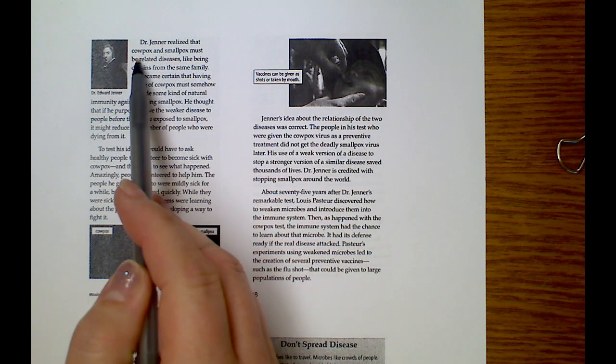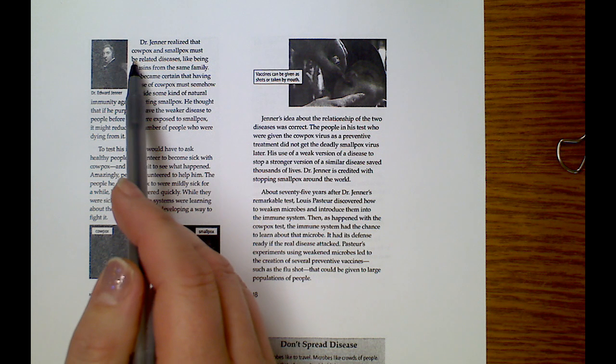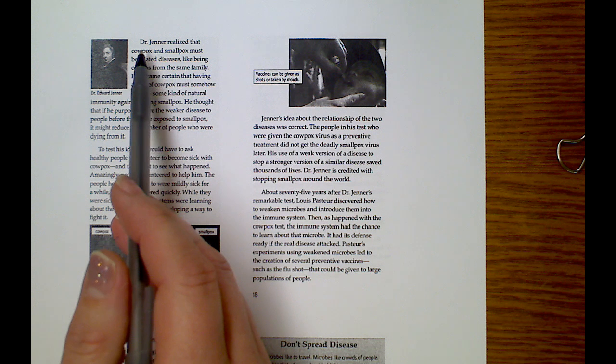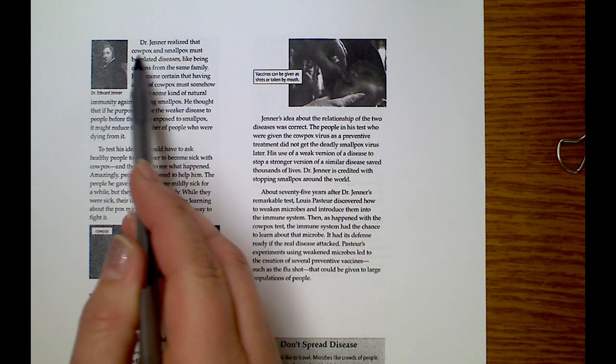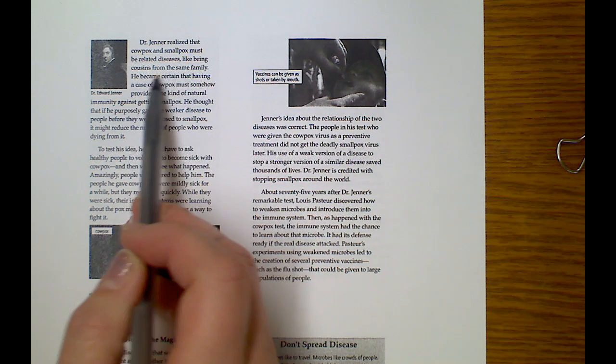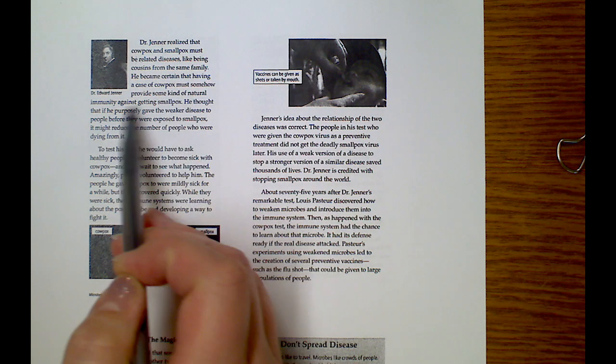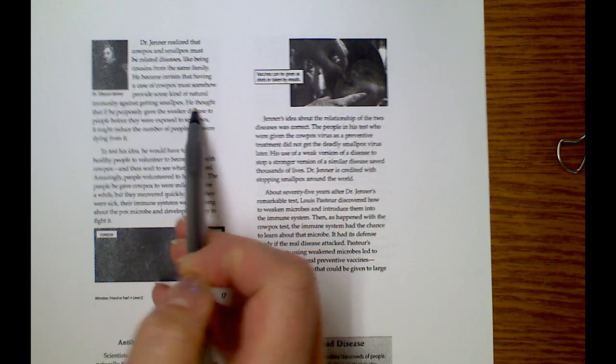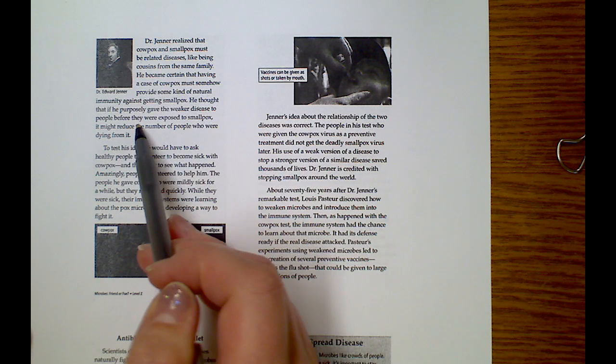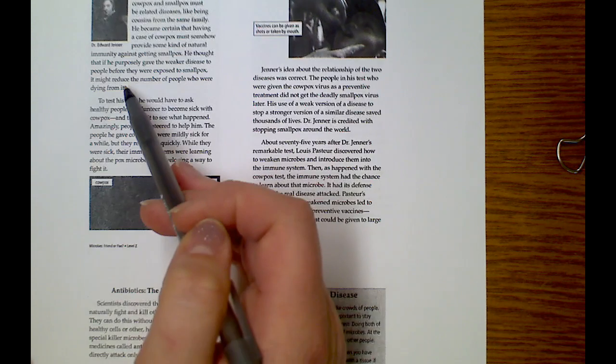Here we go. Dr. Jenner realized that cowpox and smallpox must be related diseases, like being cousins from the same family. He became certain that having a case of cowpox must somehow provide some kind of natural immunity against getting smallpox. He thought that if he purposely gave the weaker disease to people before they were exposed to smallpox, it might reduce the number of people who were dying from it. Very fascinating.